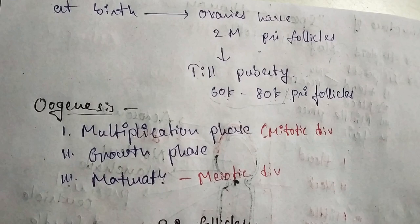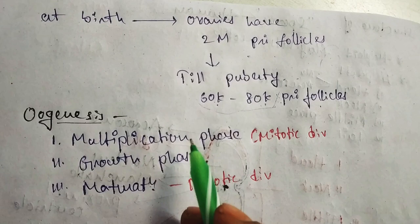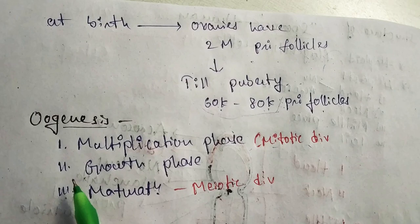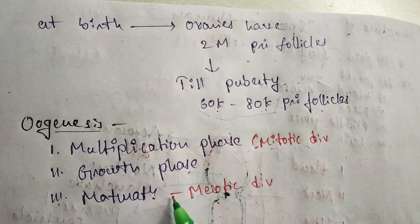The oogenesis process is done in three phases. The first is the multiplication phase, in which mitotic division occurs. The second is the growth phase. The third is the maturation phase, in which meiotic division occurs.